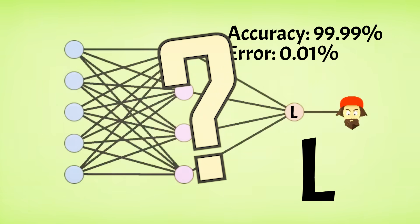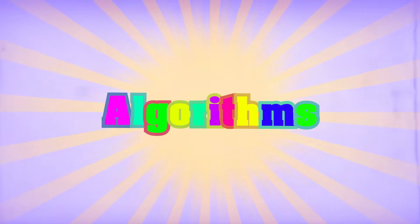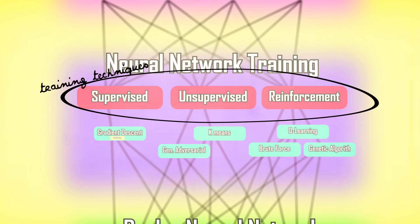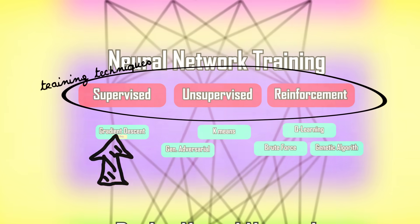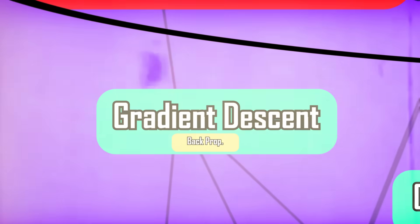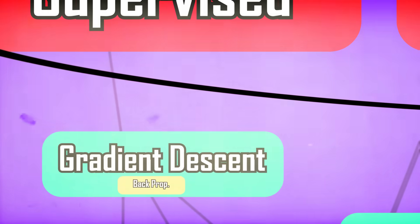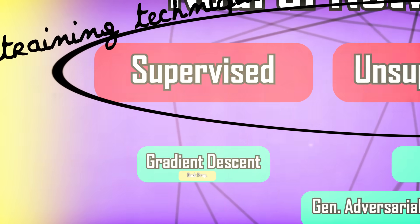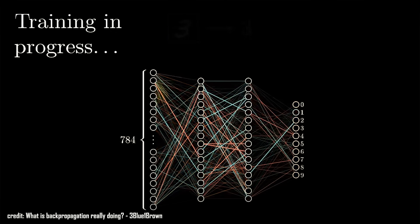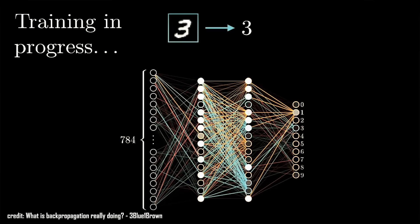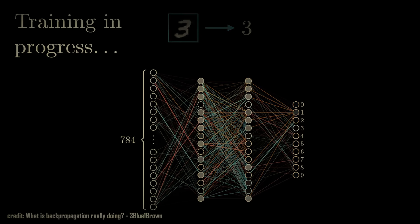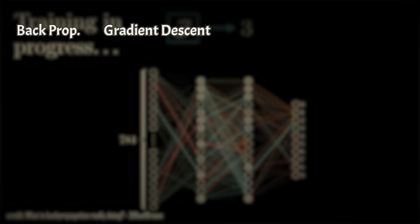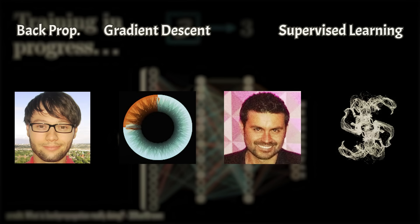So how does the network know how to correct its values? Well, algorithms. Each training technique has its own collection of algorithms to use for training. Backpropagation is actually only just a part of a bigger algorithm used called gradient descent for the supervised learning technique, which is pretty much taking the partial derivatives of an error function with respect to all neural network values. If you want to learn more about backpropagation, gradient descent, supervised learning and more, I've added a few really good references in the description.